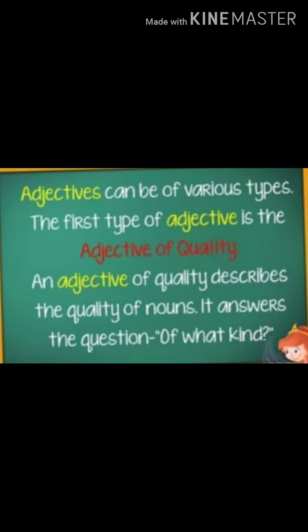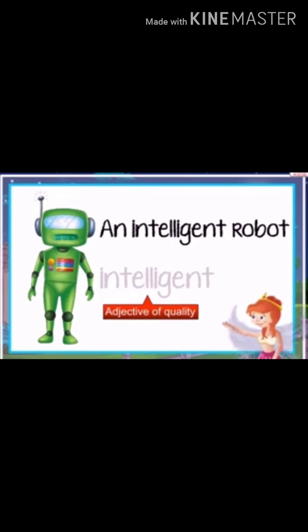The first kind of adjectives is the adjective of quality. The adjective of quality describes the quality of nouns. It answers the question of what kind. For example, an intelligent robot. In this, the word intelligent is the adjective.